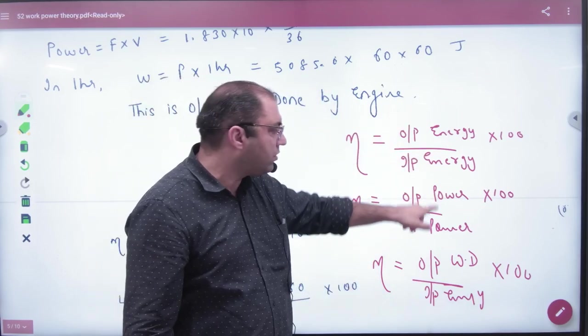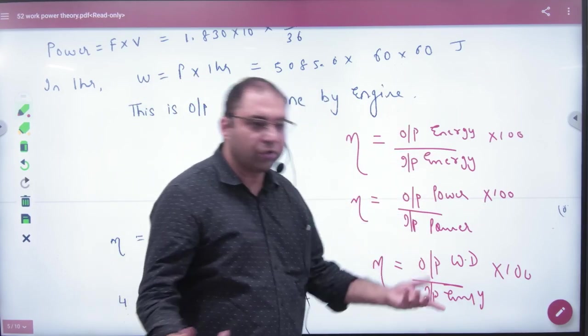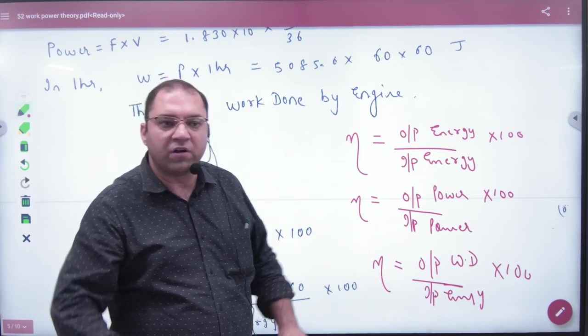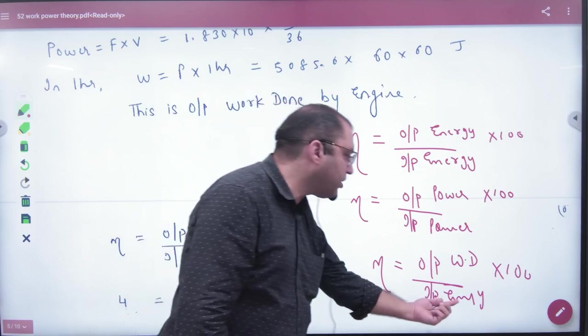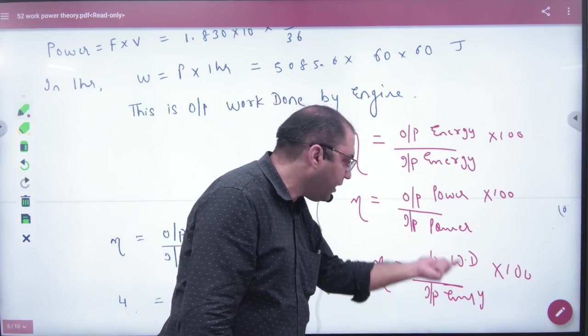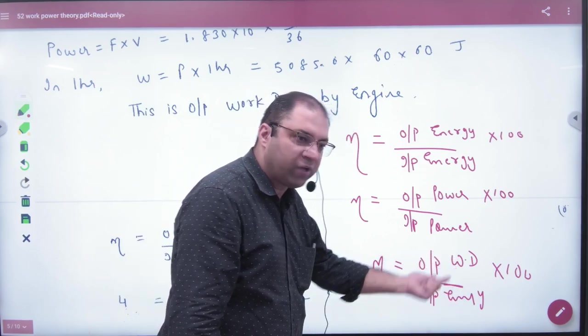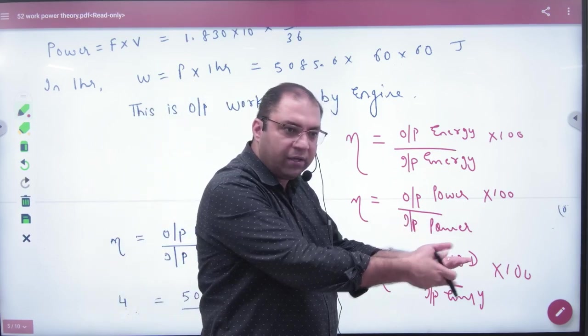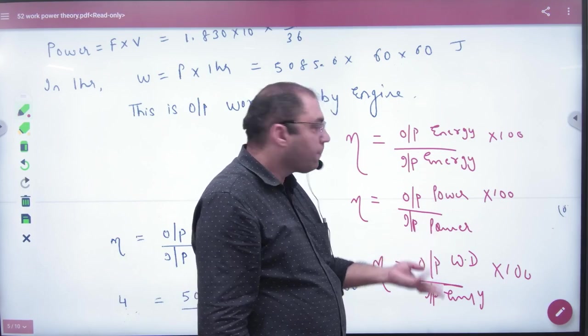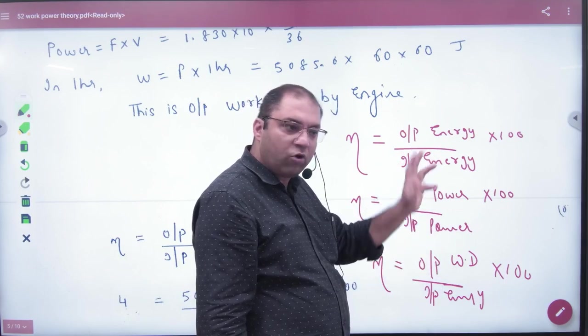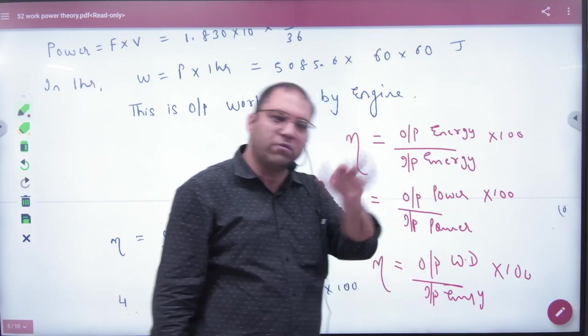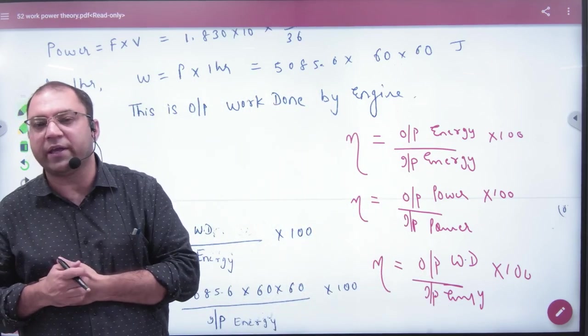It doesn't matter which formula you use. If both are in joules, use energy by energy. If both are in watts, use power by power. Any formula works because the units match appropriately. The efficiency definition remains consistent across all these forms.